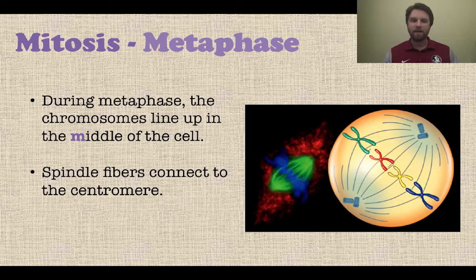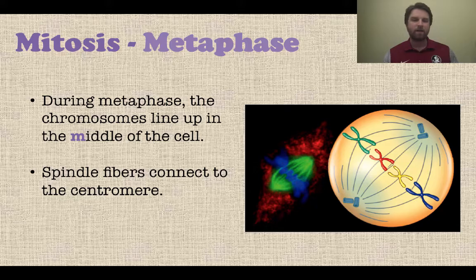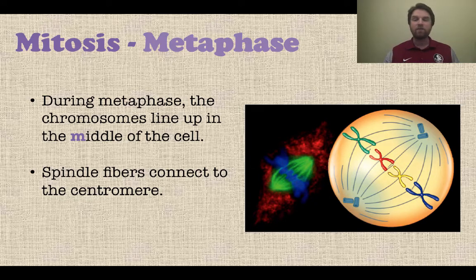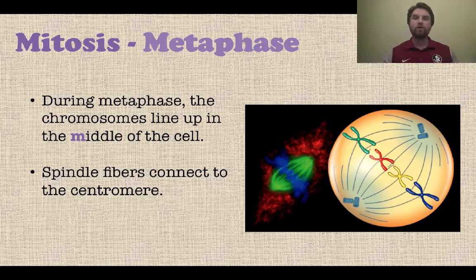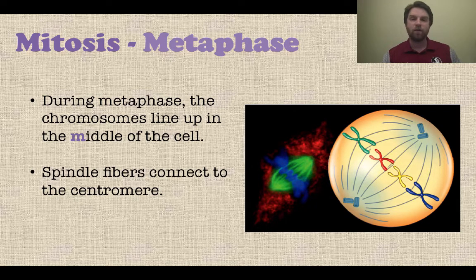Next is metaphase. During metaphase, the chromosomes line up in the middle — metaphase, middle. You can see how they're all lining up right there. The spindle fibers are going to connect to the centromere, so the spindle fibers come from the centrioles to the centromere of the chromosome — that's where they attach and hook onto them.